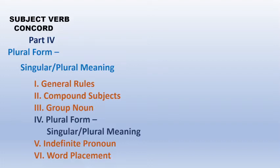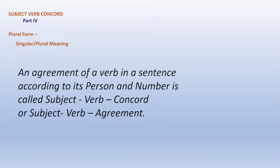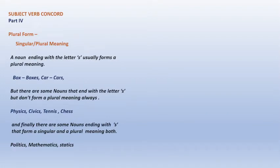We studied about general rules, then compound subjects, group nouns, and now we are going to continue plural form singular meaning and plural form plural meaning. An agreement of a verb in a sentence according to its person and number is called subject-verb concord or subject-verb agreement. If your subject is in singular number, you will use singular verb, but if your subject is in plural number, you will place plural verb.